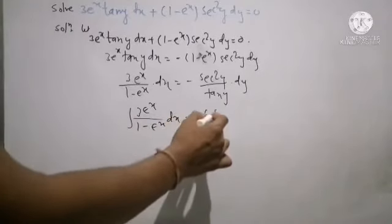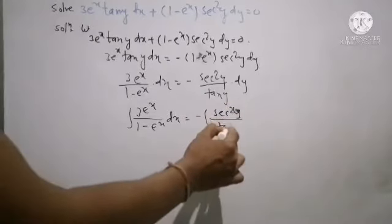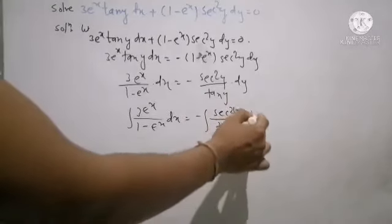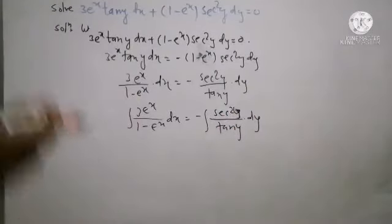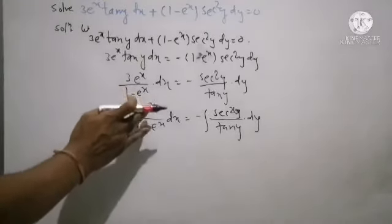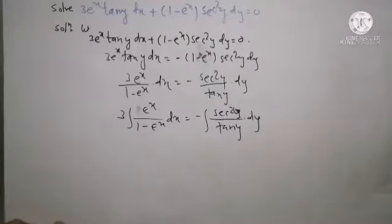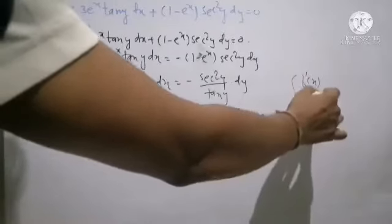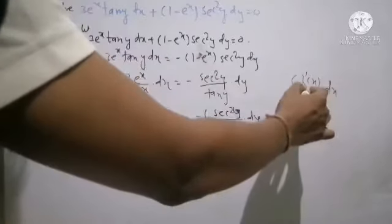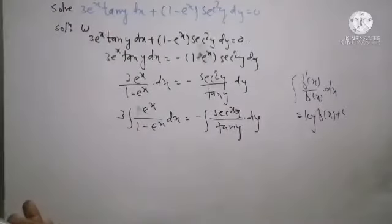Now take simple integration on both sides to solve the given differential equation. Minus came outside, and we have six-squared y and six-squared y into tan of y dy. We can observe that this is a fraction, so we can use the form of the integral f-dash x divided by f of x. As we know, the integral of f-dash x upon f of x is log of denominator plus c. On the left hand side, one minus e raised to x is the denominator.